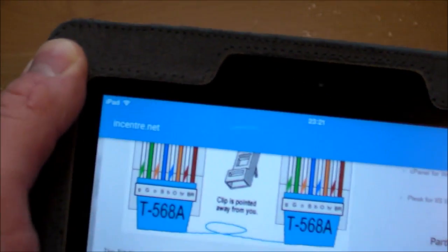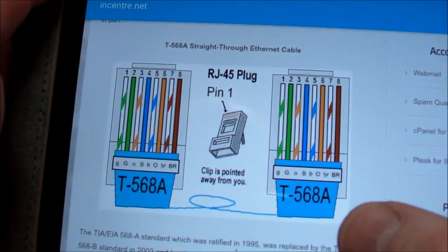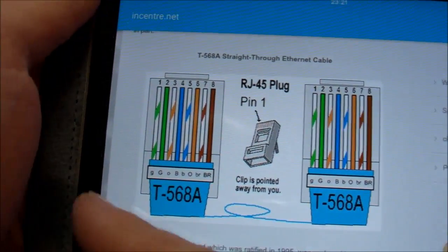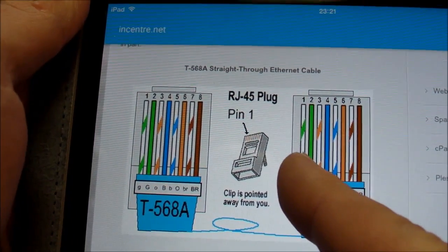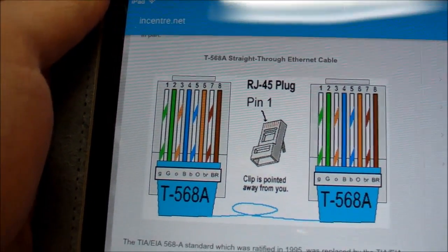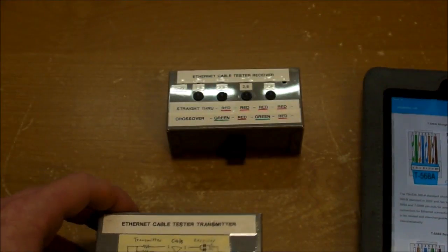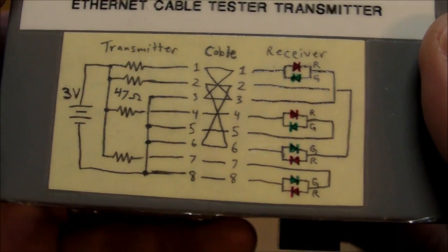The green and green stripe for the Type A termination, if you got green stripe and green on one side and then green and green stripe on the other side, that would show up as just a normal connection as if nothing was wrong. And even so, that might be just fine.